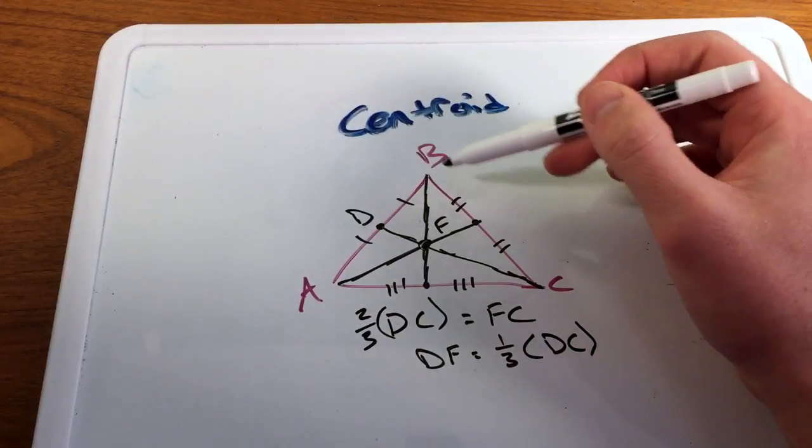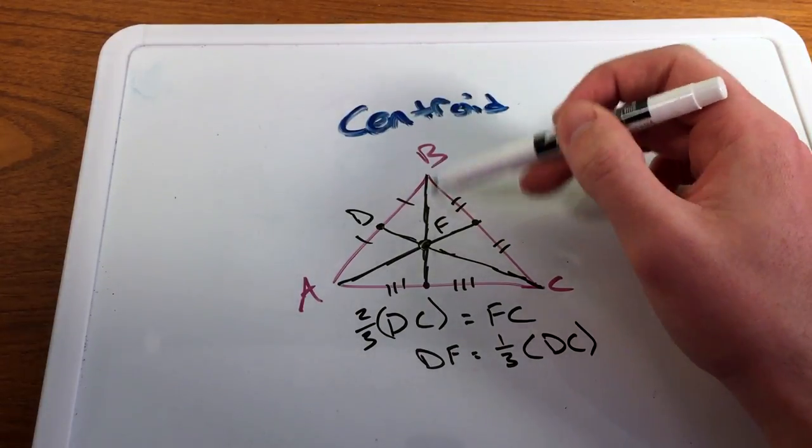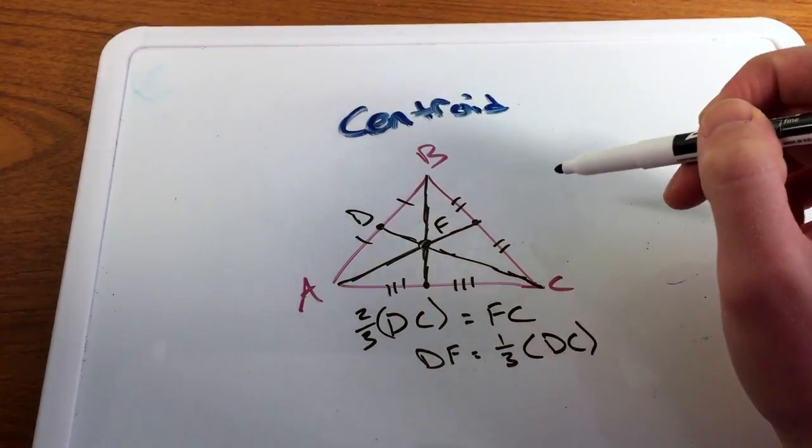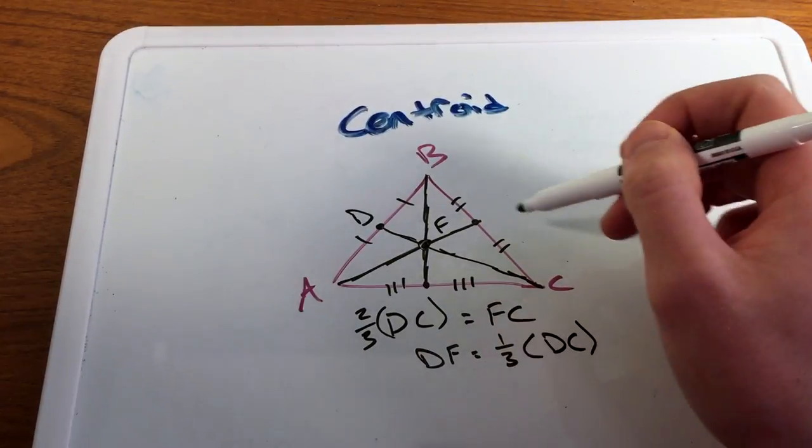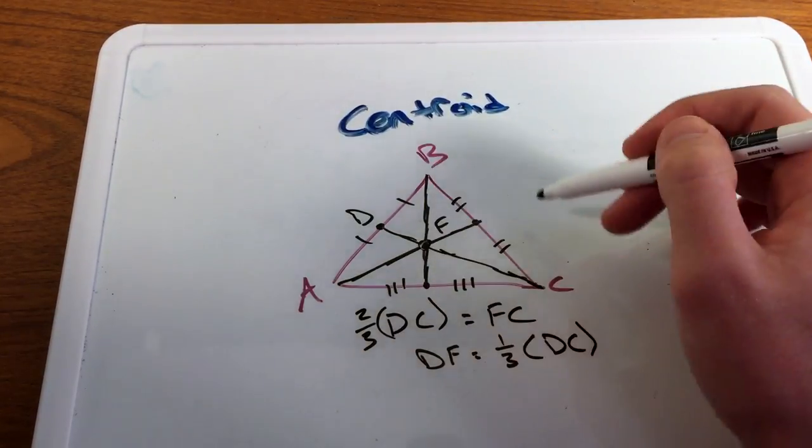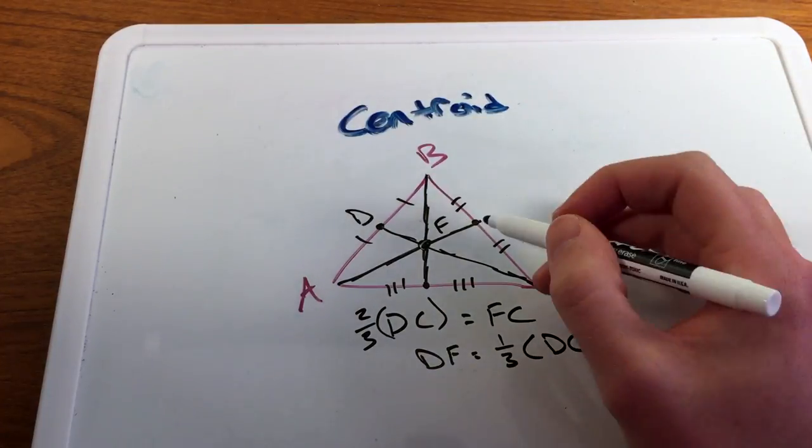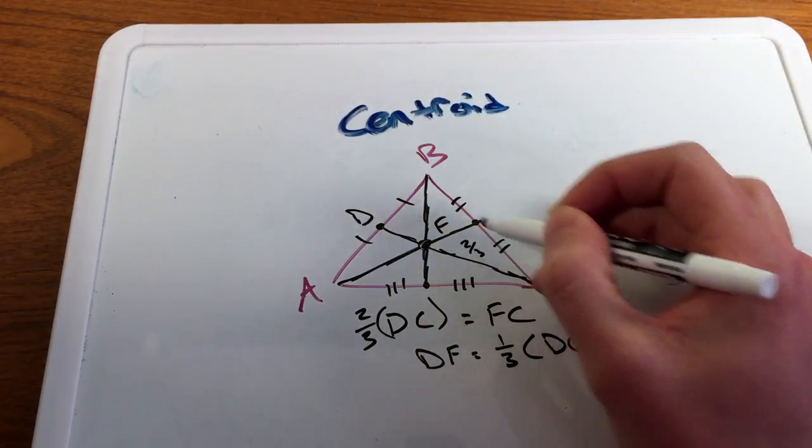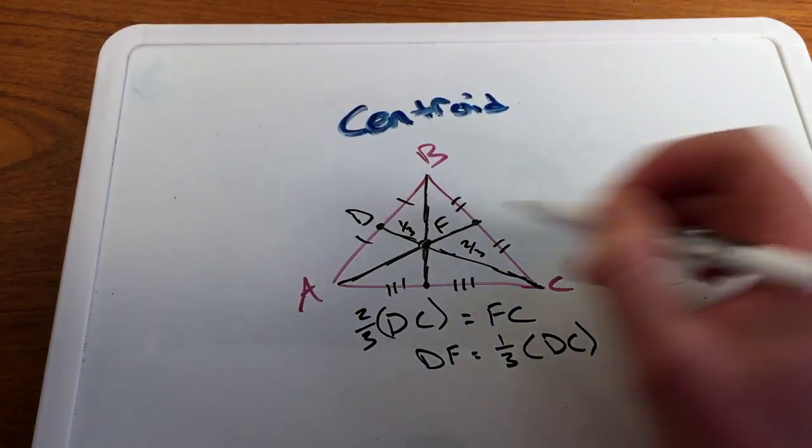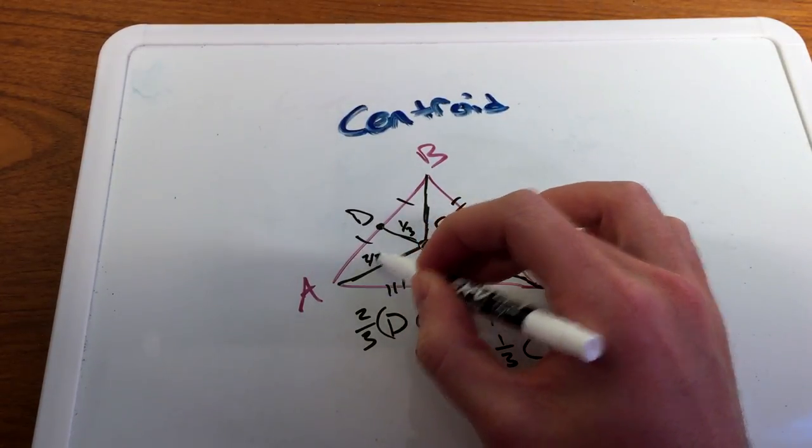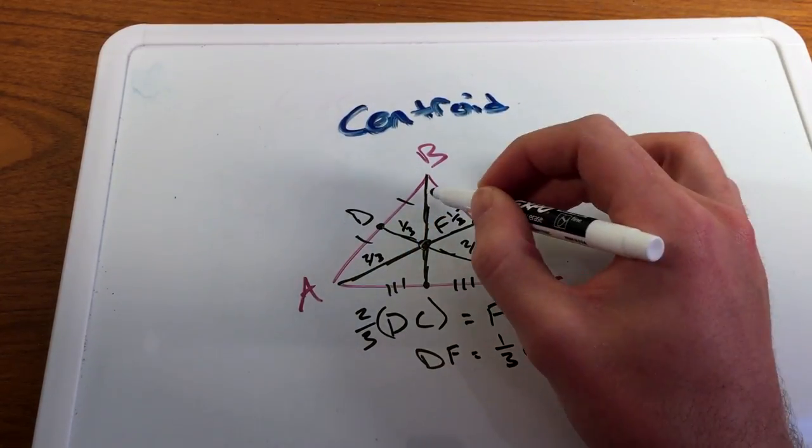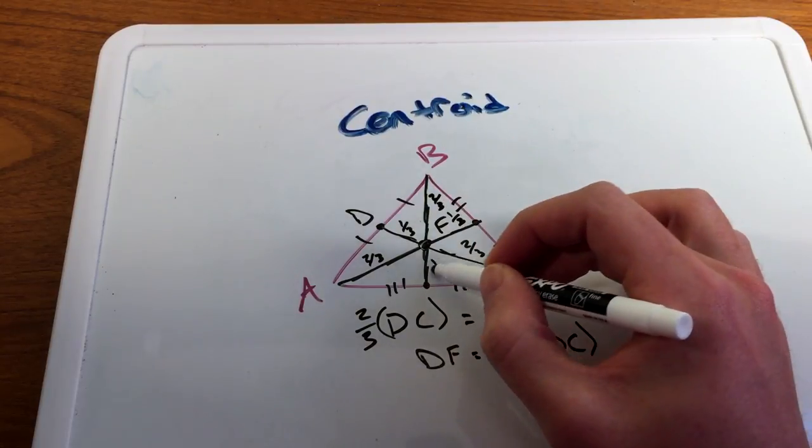And you can do that all the way across with the segment here and this one here. All three medians will all be the point of concurrency and these will all be two-thirds or just one-third of the overall length there. So some people are going to write as two-thirds here and one-third as a little quick note for yourself. Again, this will be two-thirds and this will be one-third, and this one two-thirds of the overall length and this one one-third.